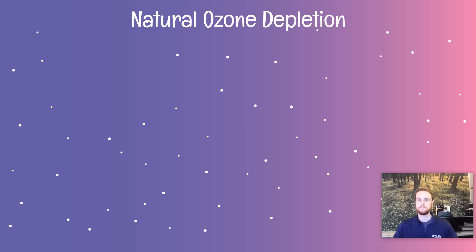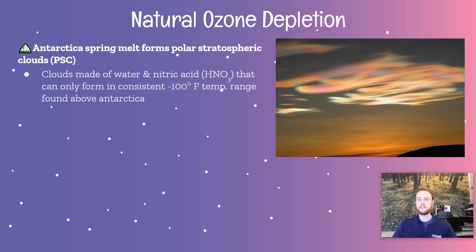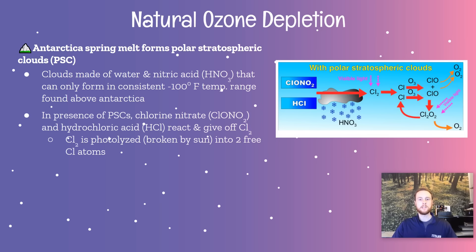Now we'll look at a process that leads to natural ozone depletion. This is going to occur typically in the springtime over Antarctica. What's going to happen is we're going to form something called polar stratospheric clouds. These PSCs are clouds that are made of nitric acid and can only form in consistently below negative 100 degree temperatures. This is very unique to Antarctica because you need negative 100 degree Fahrenheit temperatures in order to sustain these cloud formations. In the presence of these polar stratospheric clouds, we have two compounds in the atmosphere called chlorine nitrate and hydrochloric acid, or HCl.